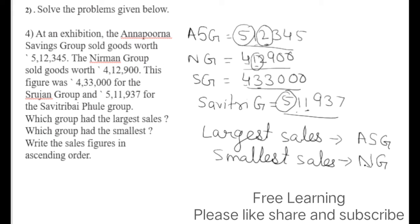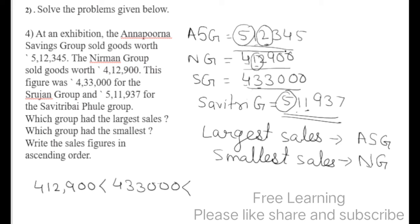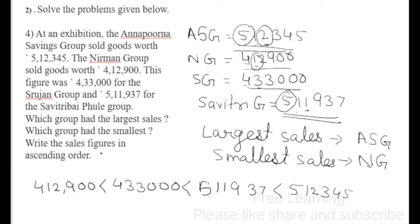Write the sales figures in ascending order — smallest to biggest. First write four lakh twelve thousand nine hundred (Nirmal Group, smallest); then four lakh thirty-three thousand (Srujan Group); then five lakh eleven thousand nine hundred and thirty-seven (Savitri Bai Phule Group); and finally five lakh twelve thousand three hundred and forty-five (Annapurna Saving Group, largest). This is the ascending order. I hope all of you have understood all the examples. Thank you for watching — please like, share, and subscribe to my channel.